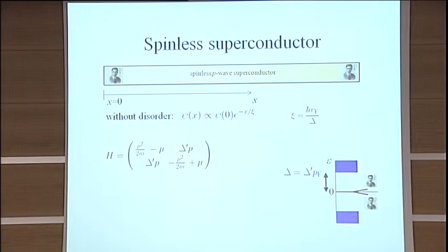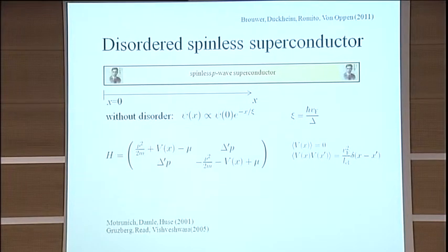And now the question that I want to answer is, what if I add to this Hamiltonian a disorder potential and I add the same disorder potential that you always add if you look at semiconducting systems? It's a Gaussian white noise potential, so zero mean and a variance which is proportional to one over the mean-free path.